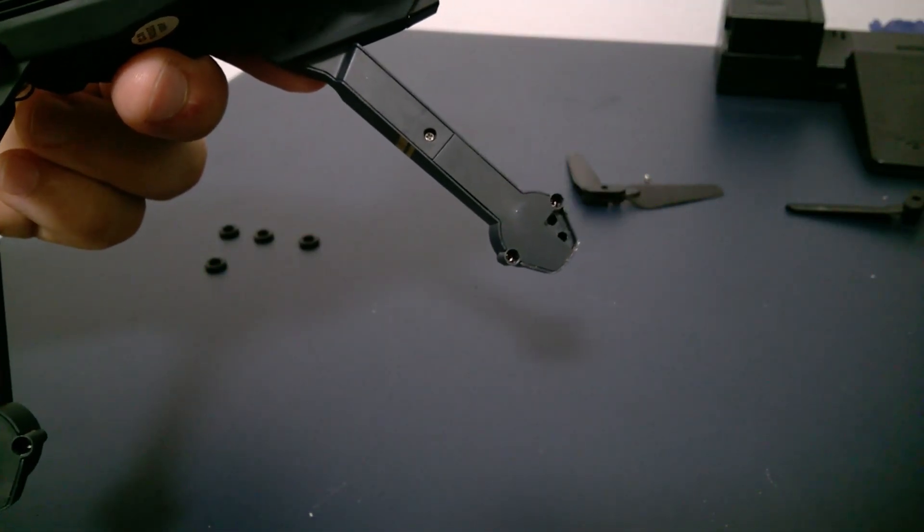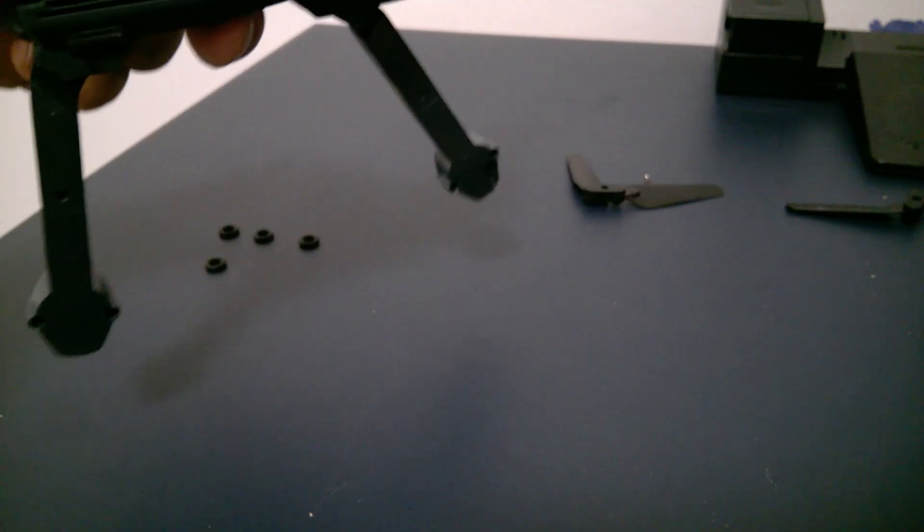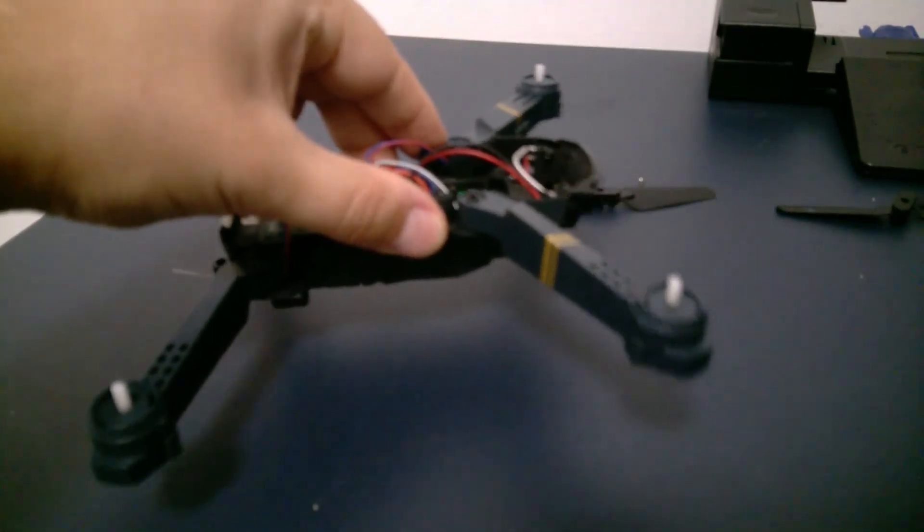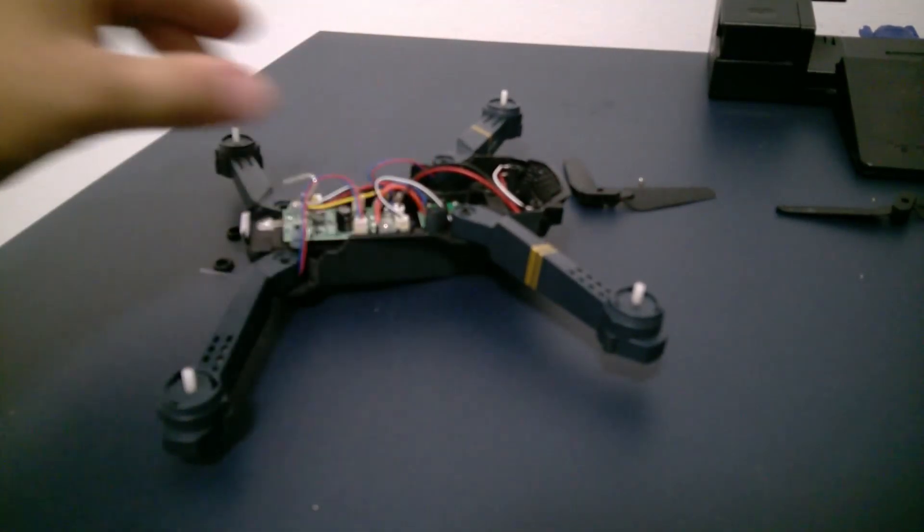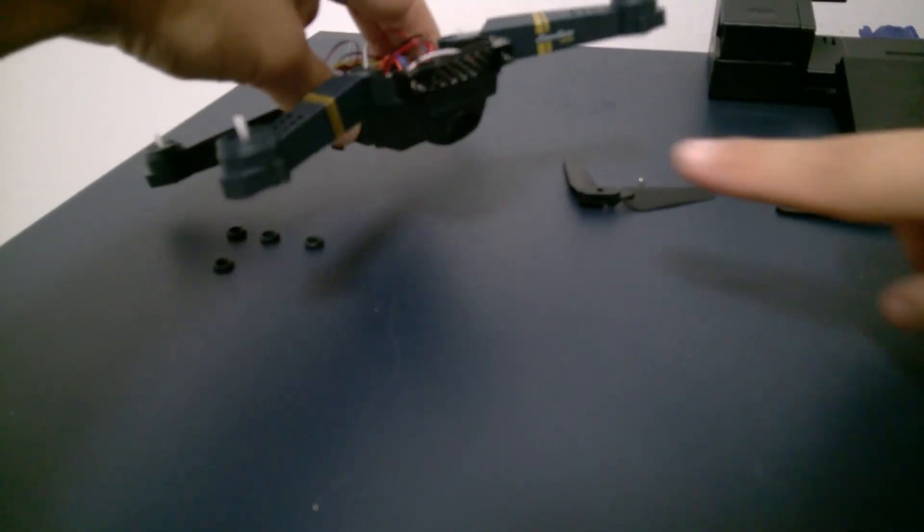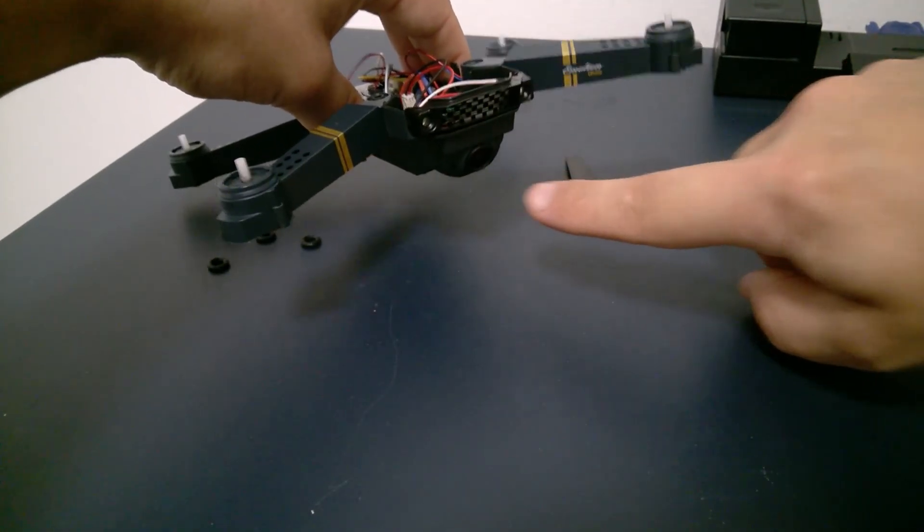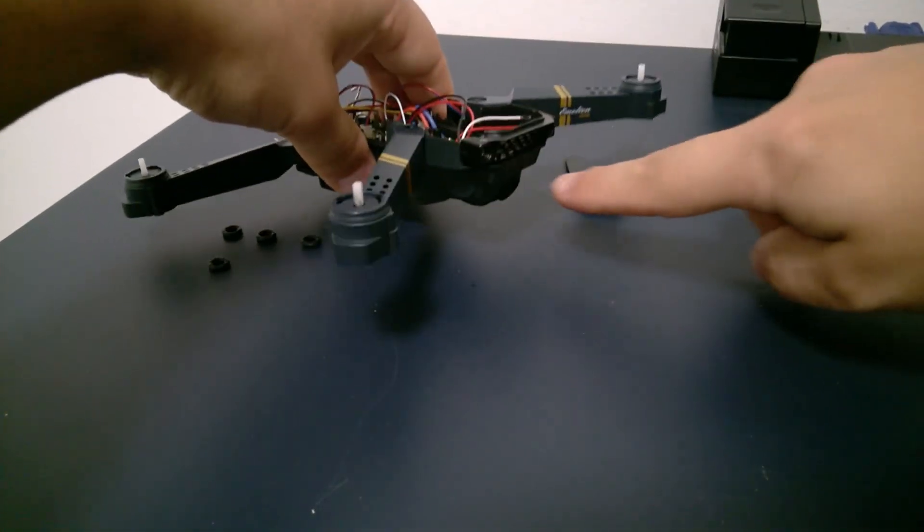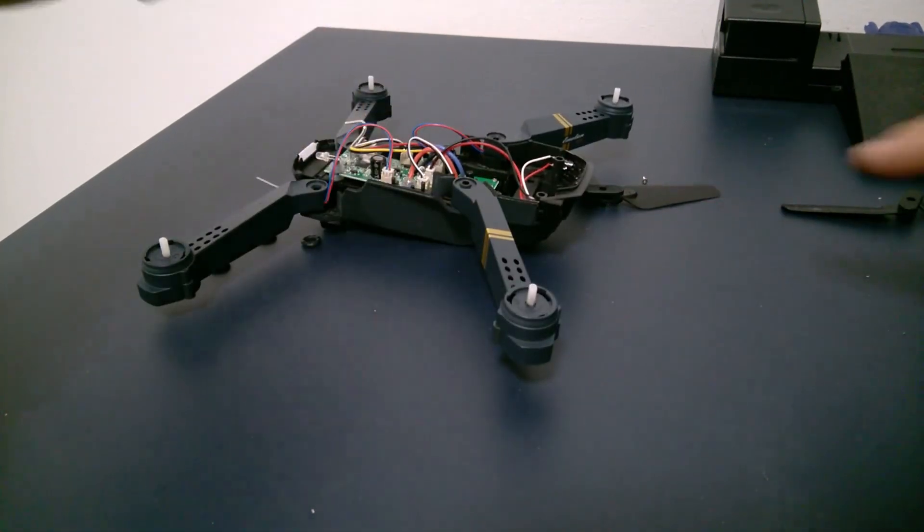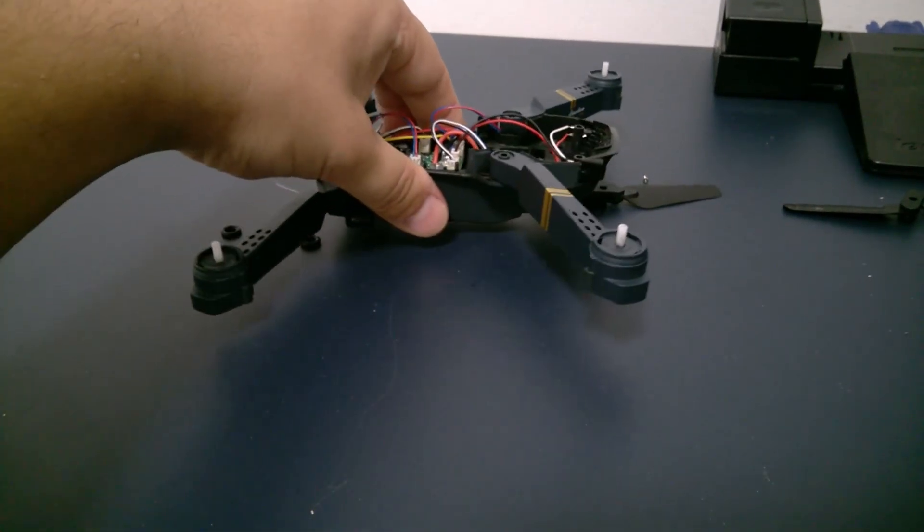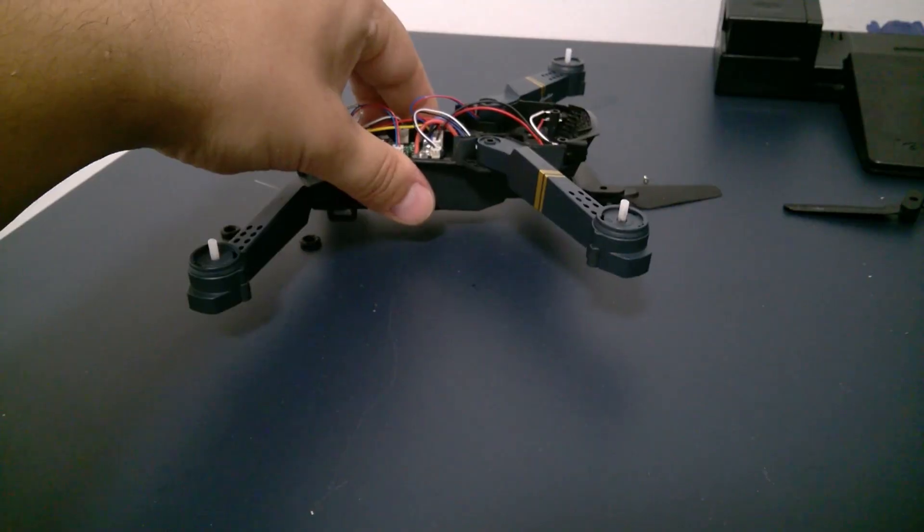And I think it even started flying better. I didn't see any advantage of having those supports because the drone's camera is not being damaged when it lands. Because there's still distance between the ground and the drone.